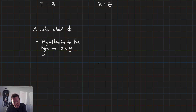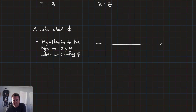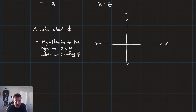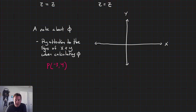What do we mean by that? Looking top-down along the z-axis at our x and y axes, say we have two points: point P at (-3, 4), which lands in the second quadrant.